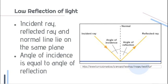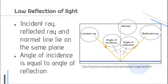The law of reflection of light has two important statements. First, the incident ray, reflected ray, and normal line lie on the same plane. Second, the angle of incidence is equal to the angle of reflection. So if the angle of incidence is 30 degrees, the angle of reflection is also 30 degrees.